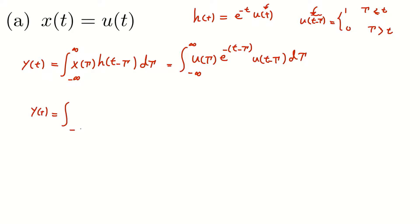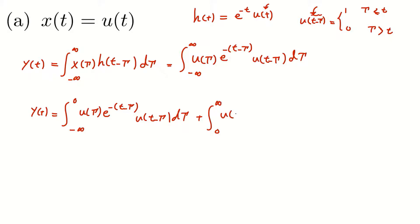Based on that, I can simplify y(t) by splitting it into two integrals: from minus infinity to zero of u(τ) e^(-(t-τ)) u(t-τ) dτ, plus the integral from zero to infinity of the same product. Since u(τ) equals zero in the interval from minus infinity to zero, that whole first integral is zero.